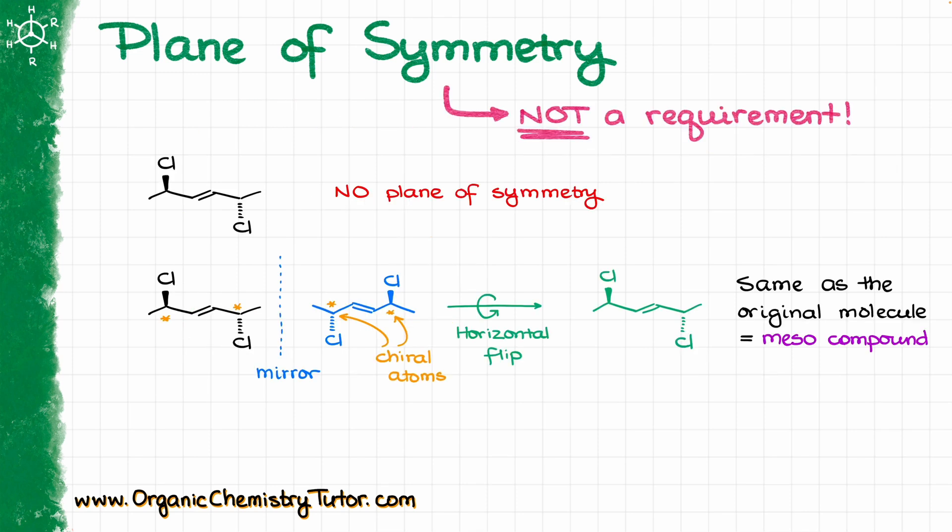But while many meso compounds do have a plane of symmetry, having a plane of symmetry is not a requirement. The definition of a meso compound does not mention anything about the plane of symmetry. This is one of the most common misconceptions that a lot of students and even some instructors hold. You do not need to have a plane of symmetry.